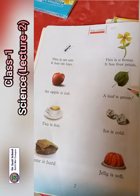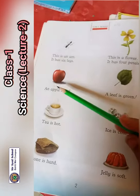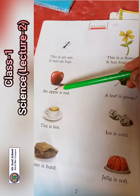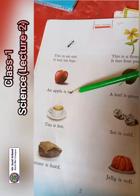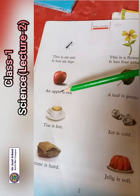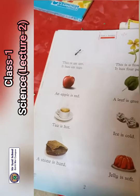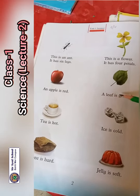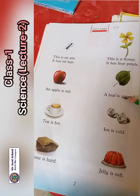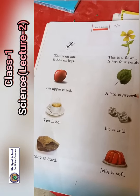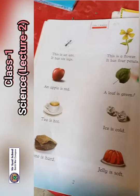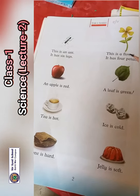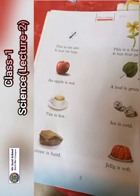An apple is red. A-P-P-L-E, apple. R-E-D, red. An apple is red — apple red colour ka hota hai. A leaf is green. L-E-A-F, leaf. G-R-E-E-N, green. A leaf is green — jo pata hota hai woh sabz rang ka hota hai, green colour ka hota hai.